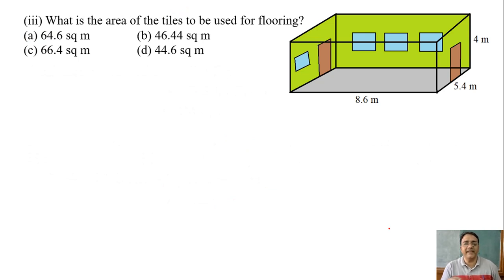What is the area of the tiles to be used for flooring? This one. What is the area of this floor? Length into breadth, l into b. So 8.6 × 5.4 meter. So we will get 46.44 square meter. So which option is the correct one?